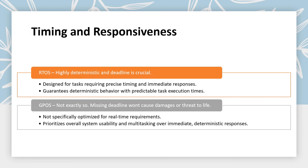With respect to timing and responsiveness, RTOS is highly deterministic and deadlines are very, very crucial. RTOS is designed for tasks that require precise timing and immediate responses, and it guarantees deterministic behavior and predictable execution times. But when you come to GPOS, they are not designed specifically for real time requirements — missing a deadline would not really cause any damages or threat to life. GPOS prioritizes overall system usability and multitasking over real time and deterministic responses.